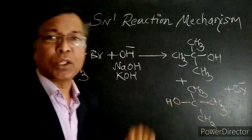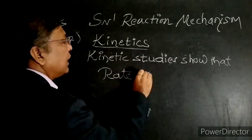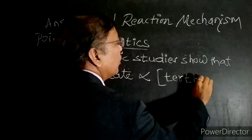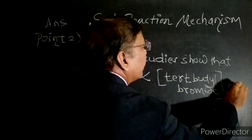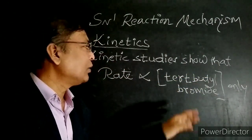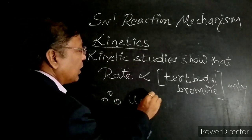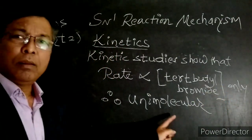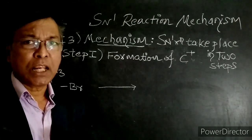Second point — kinetics. Kinetic studies show that the rate of the reaction is directly proportional to the concentration of tertiary butyl bromide only. Therefore, this is a unimolecular reaction. Therefore, SN1 reaction is a unimolecular reaction.